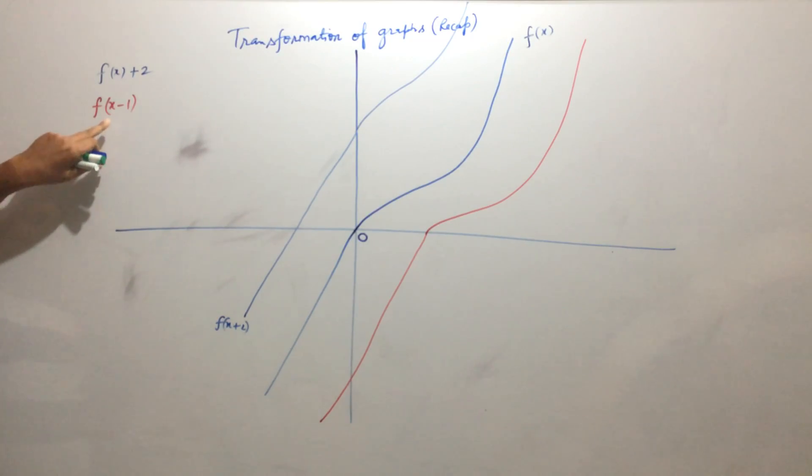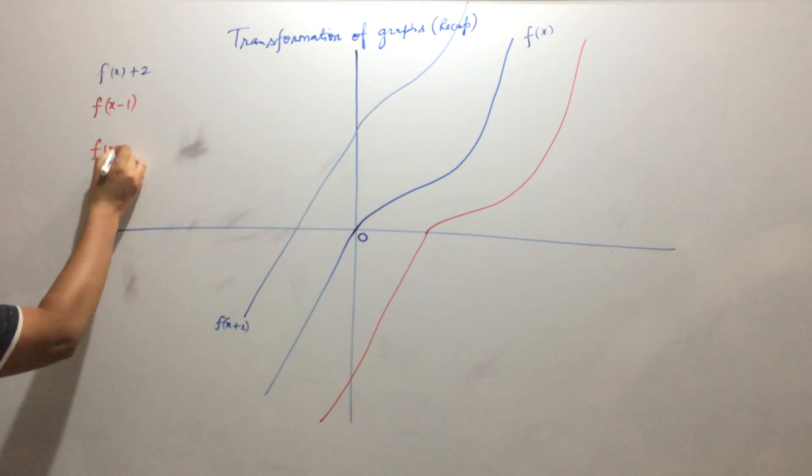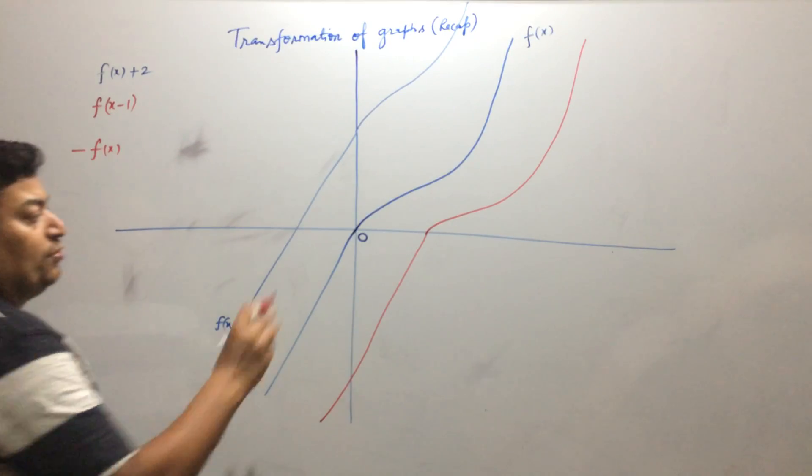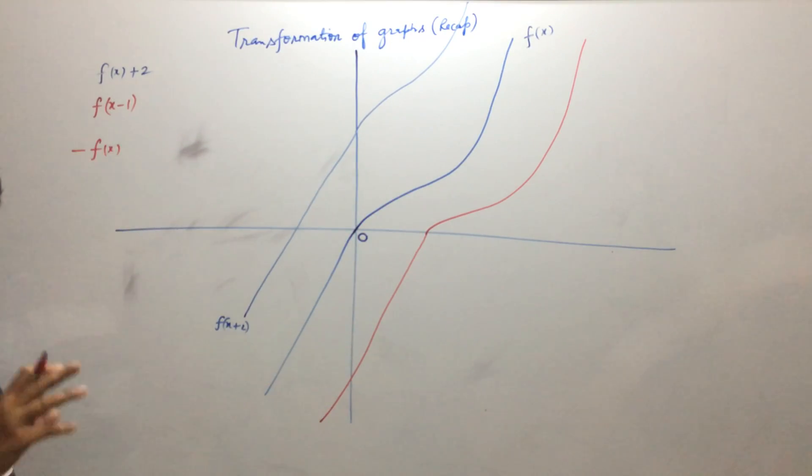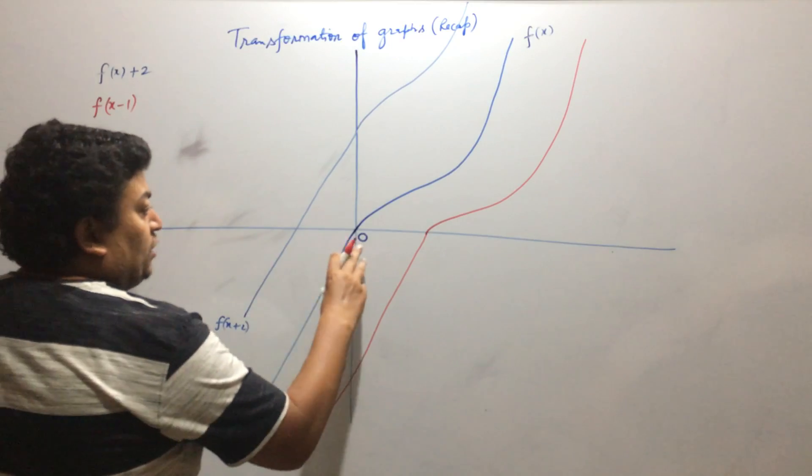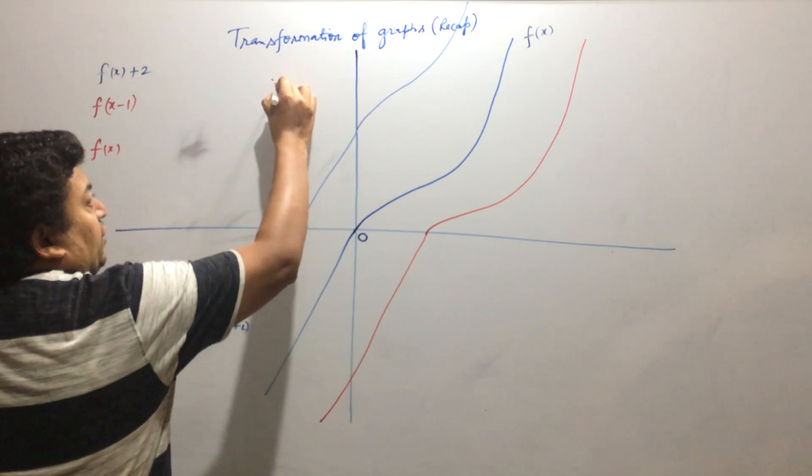That is graph of f. Suppose you could draw graph of minus f. So minus f will be obtained by taking the mirror image with respect to x-axis. It will look like this.